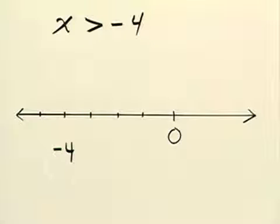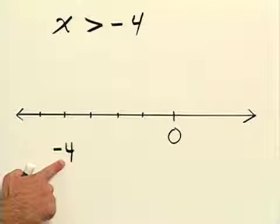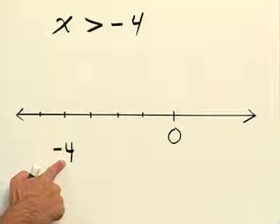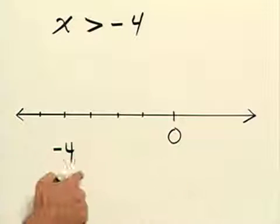For this problem we need to graph x is greater than negative 4 on the real number line. To do this we start with negative 4 as our endpoint and we want all numbers that are greater than negative 4, which would be to the right of negative 4 on the number line.